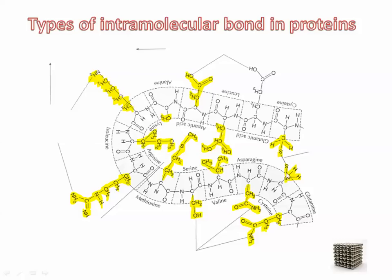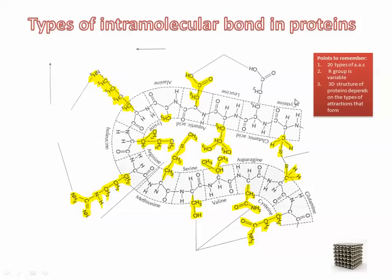Another type of interaction is where two sulfurs come close together and form a disulfide bridge. You can also have ionic charges and attractions happening between R groups. The types of bonds holding tertiary structure in place include hydrogen bonds, nonpolar interactions, and polar interactions between positively and negatively charged groups. Remember, the R group is the variable part — highlighted in yellow — and there are 20 types of amino acids.